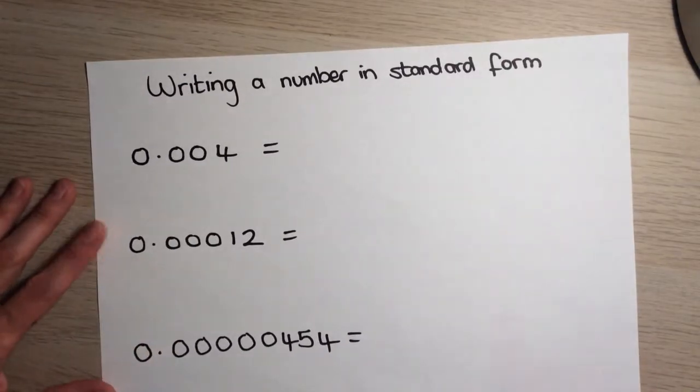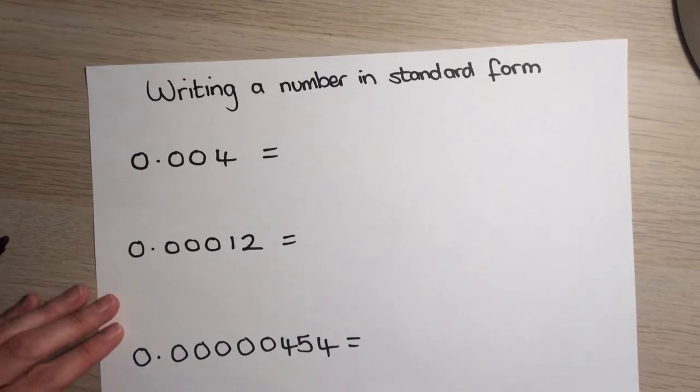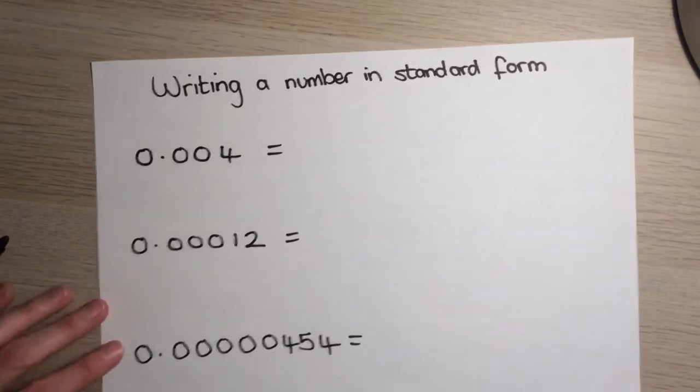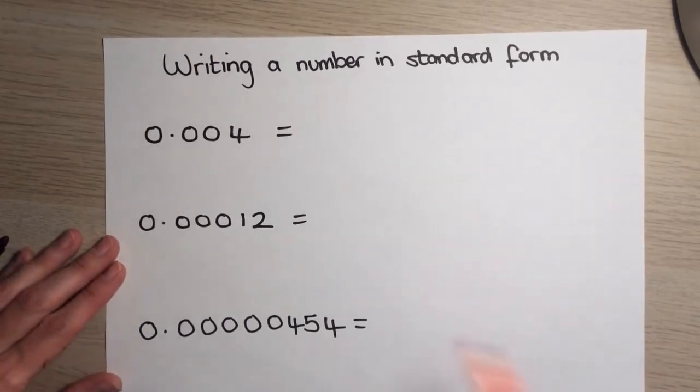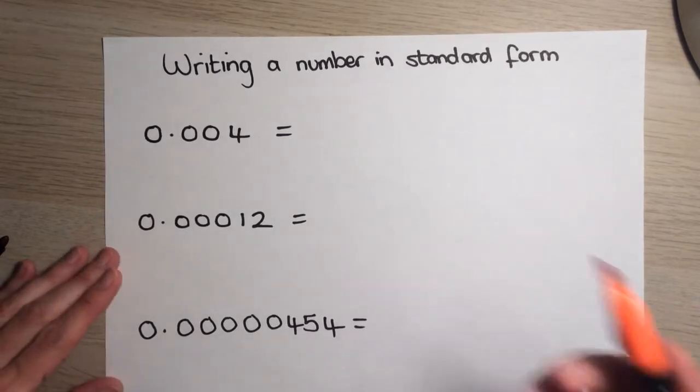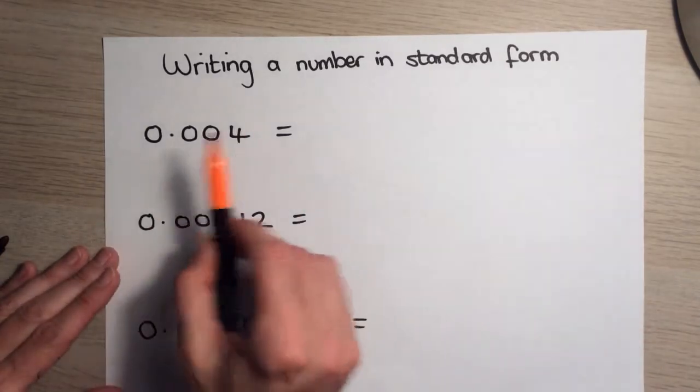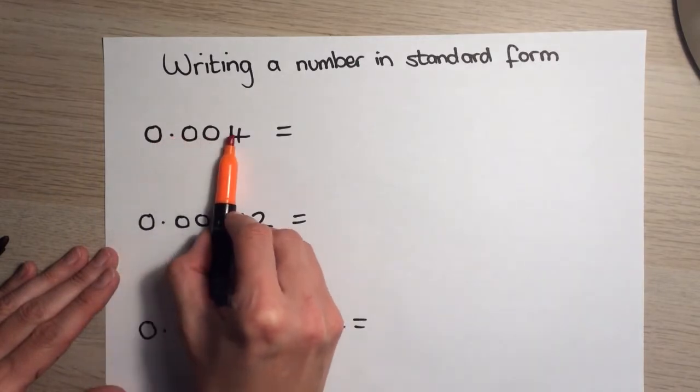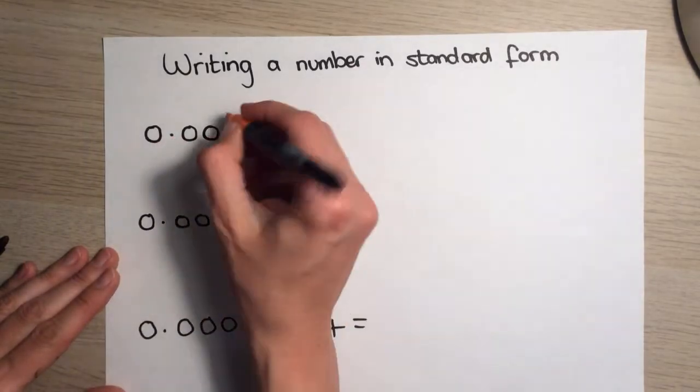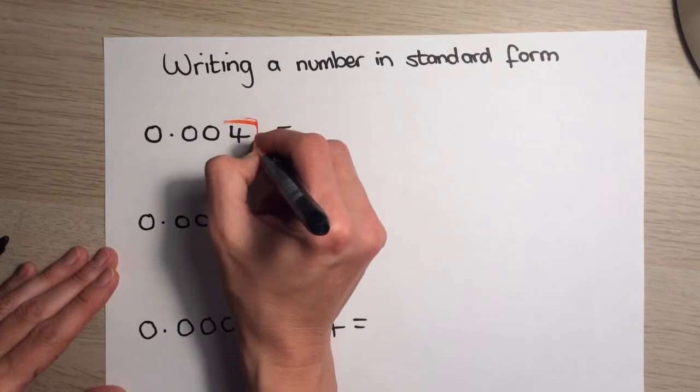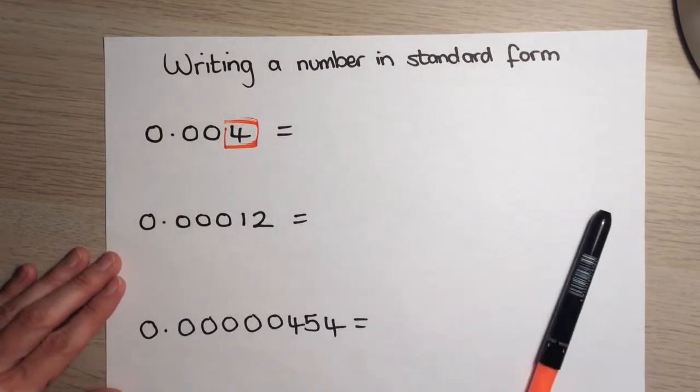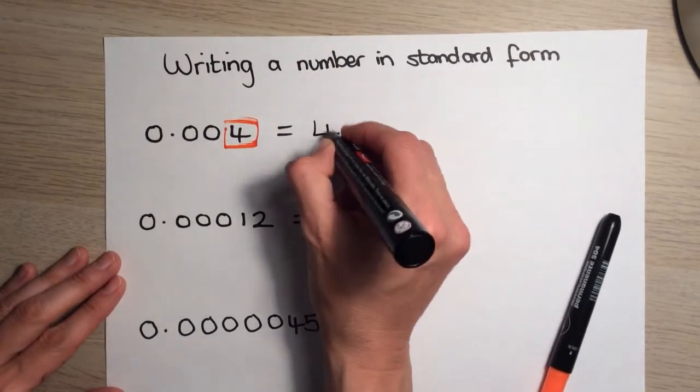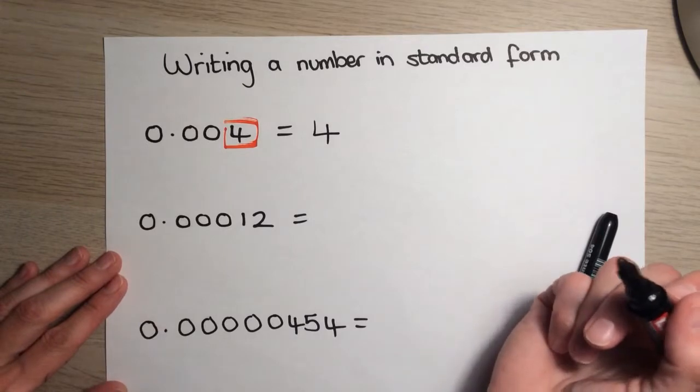So, if we start off with this as an example. If you followed my previous tutorial on numbers greater than 1, then it's quite similar. We're looking this time for any numbers that we go along the number until we find a digit that's not 0. Then I'm going to circle that number and write that here. And that's going to form my number between 1 and 10.